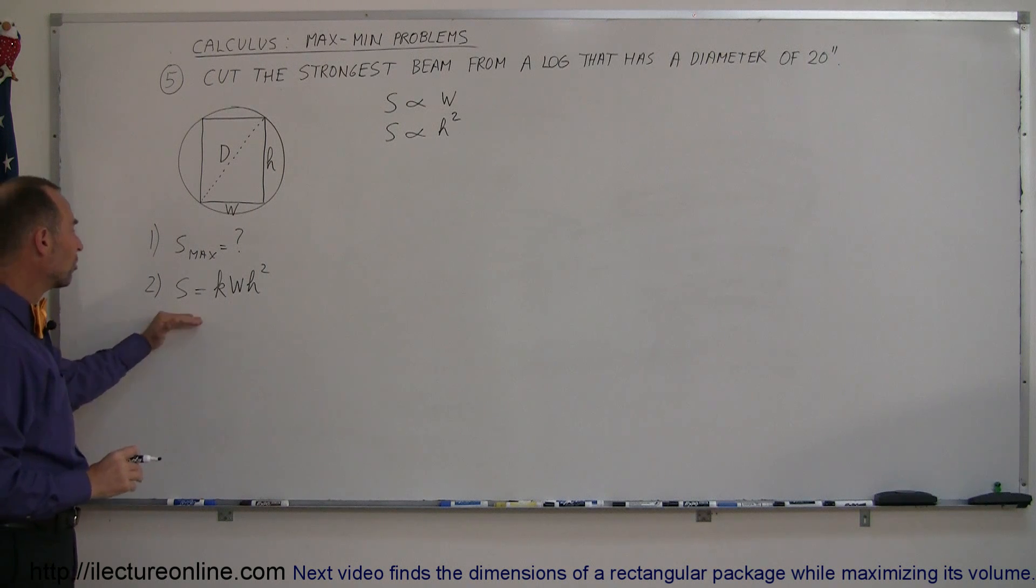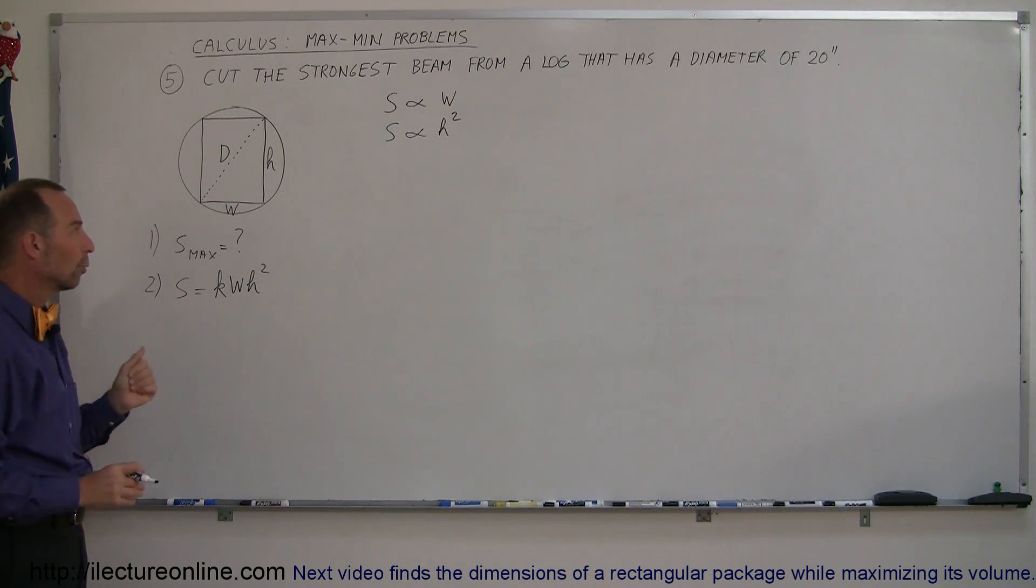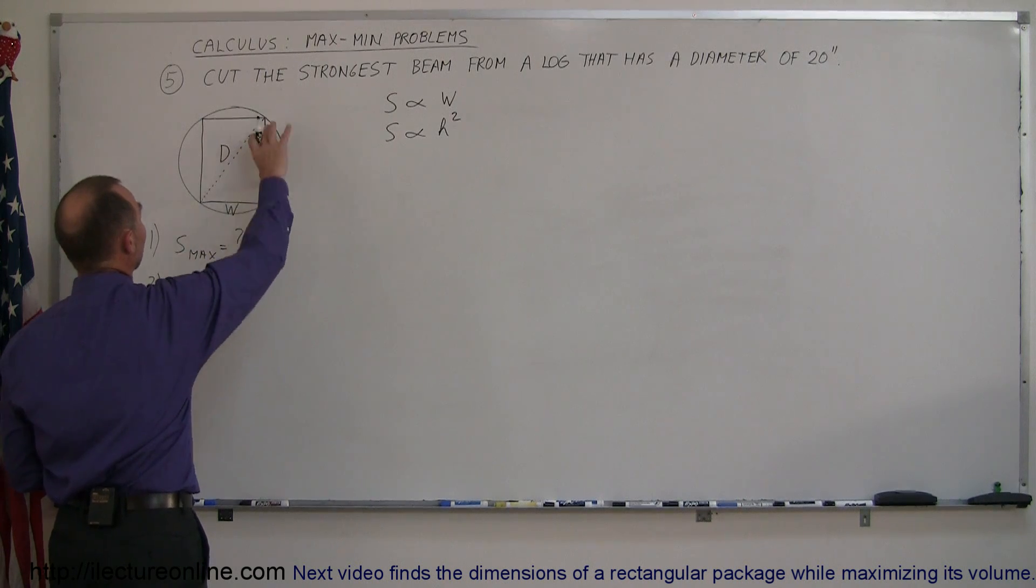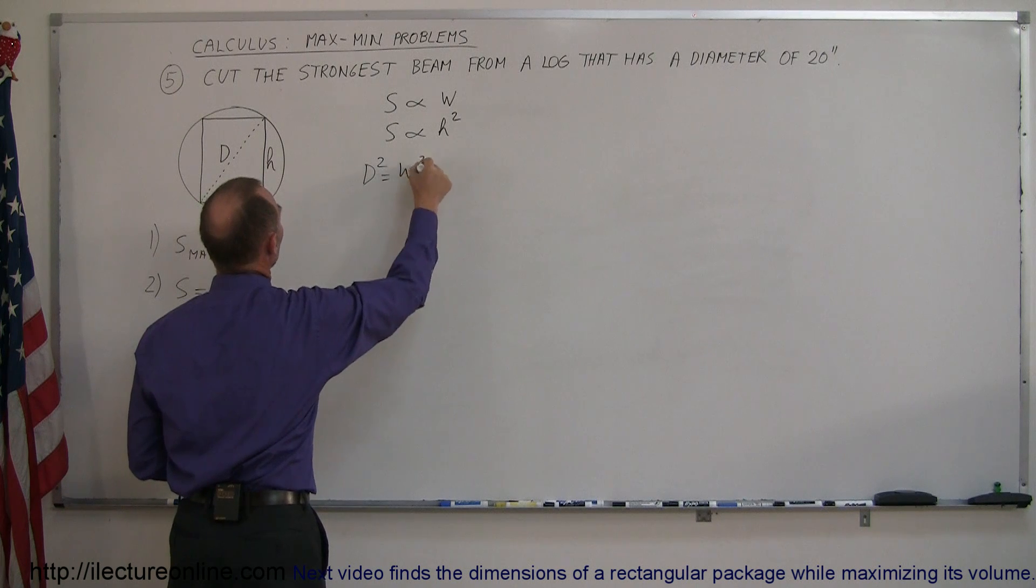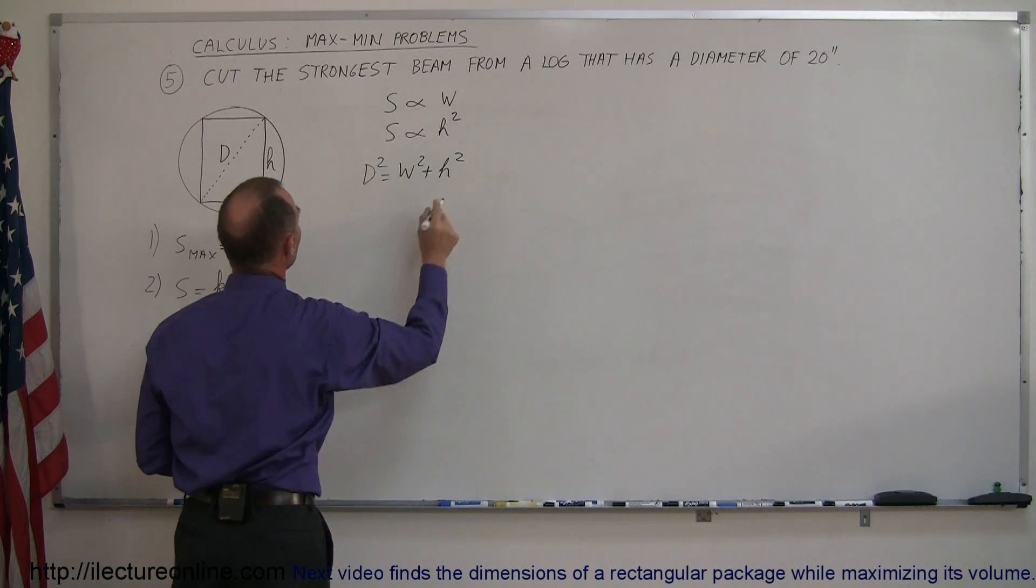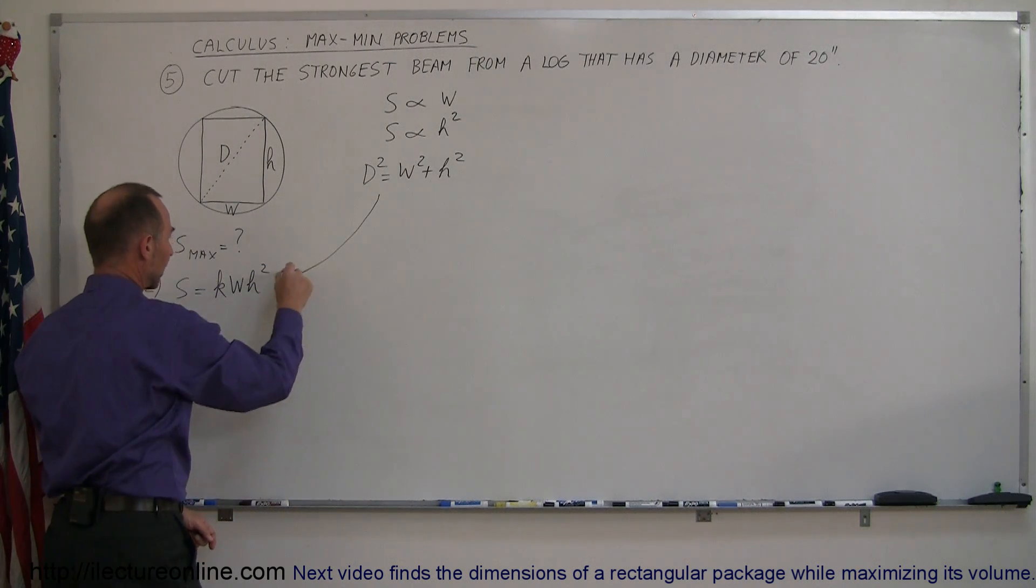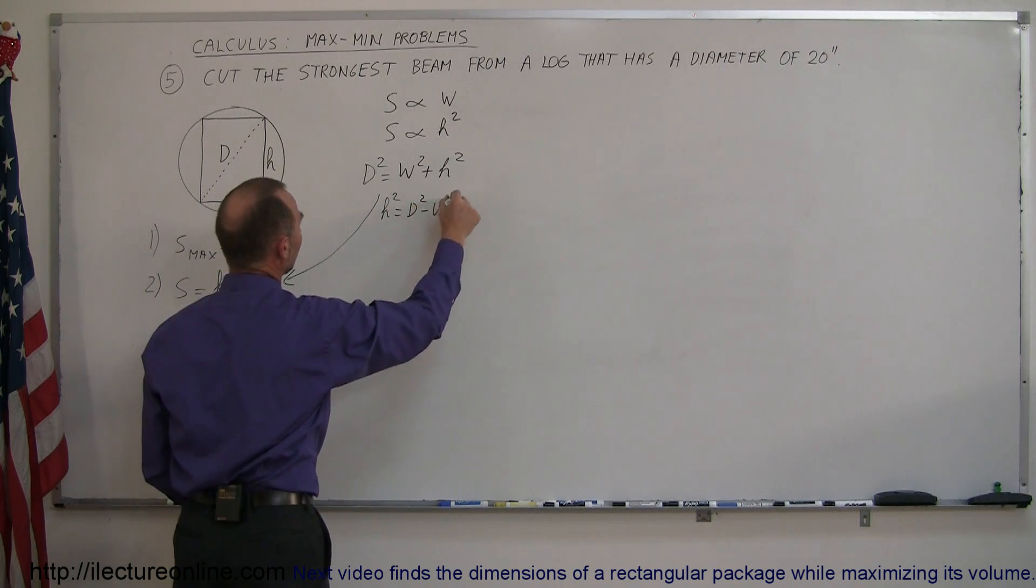All right, now that we have the equation, the next step is to take the derivative of that. No, not yet—why not? Because we have two variables: we have the width and we have the height. So we cannot take the derivative yet; we need it down to one variable. So let's see here: we have a log, diameter is d, we have the height and the width. So from here we can see that d² is equal to w² plus h². And since we have an h² in the equation, we can solve that for h² and substitute that in. So we can say that h² is equal to d² minus w².